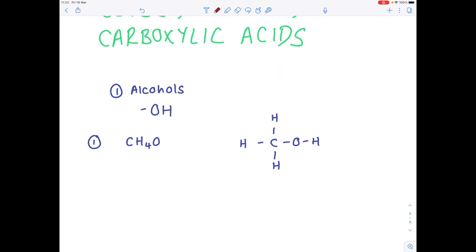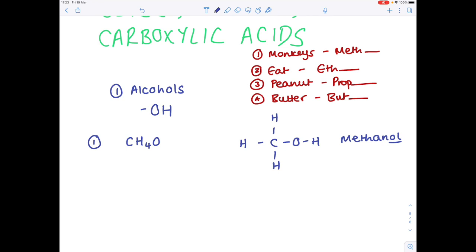Now in order to name our alcohol remember that we use the mnemonic monkeys eat peanut butter and that will help us remember our prefixes. So monkey stands for meth, eat stands for eth, peanut stands for prop, butter stands for but. And so because we're looking at one carbon, we therefore know that our alcohol is called methanol. And the last thing to be aware of is that all alcohols end in ol.